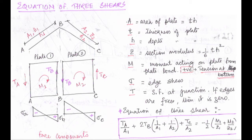A stands for area of the plate: A = T × H, where T is thickness and H is depth. A1 and A2 are the areas of plates AB and BC respectively. Z is the section modulus with formula Z = (1/6)TH². Z1 is for AB and Z2 is for BC.